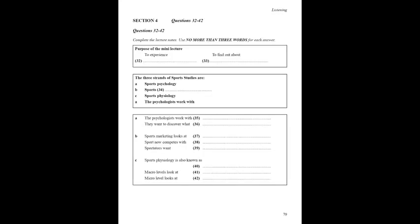So what does a course in sports studies involve? Sports studies as a discipline is still comparatively new, but it's a growing area and one which is now firmly established at our university. There are three distinct strands to sports studies and you'd need to choose fairly early on which direction you wanted to follow. Firstly, we've got the sports psychology strand. Secondly, we've got the sports management strand. And last but not least, there's the sports physiology strand.